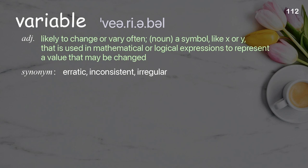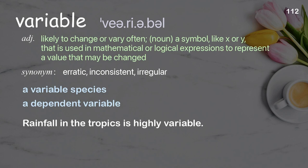Variable: likely to change very often; noun, a symbol like X or Y used in mathematical or logical expressions to represent a value that may be changed. Examples: a variable species, a dependent variable. Rainfall in the tropics is highly variable.